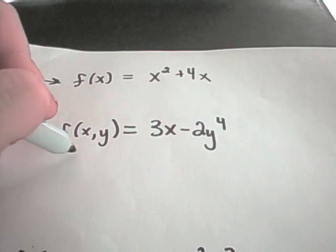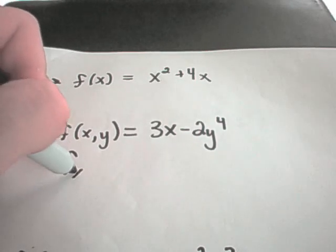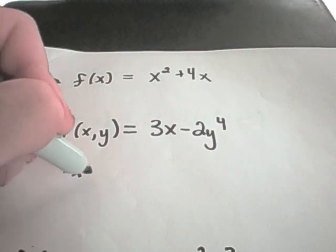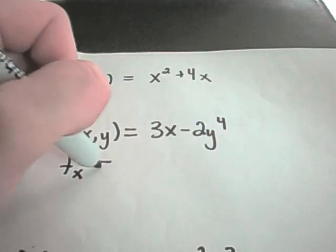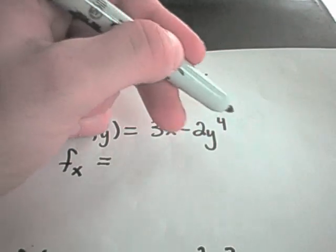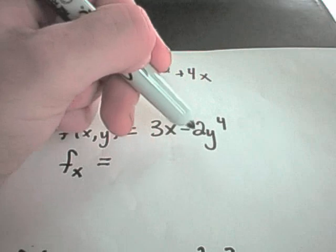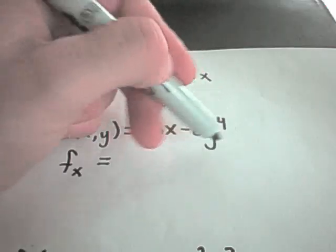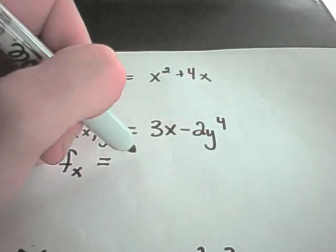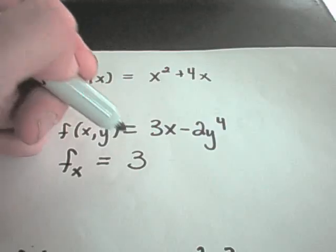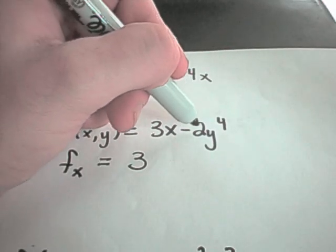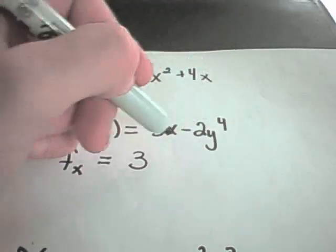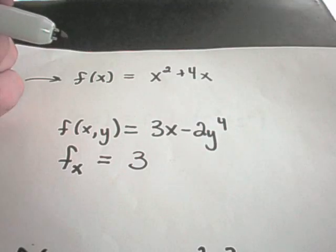So if I take the partial derivative with respect to x — this is what the f sub x notation represents — any other variable besides x I'm treating like a constant. So 2y to the fourth, in my head I'm thinking that's just a number. When I take the derivative of 3x, I simply get 3. The derivative of negative 2y to the fourth — if y is a constant, this whole thing is a constant, and it will simply disappear and I'll get minus 0.